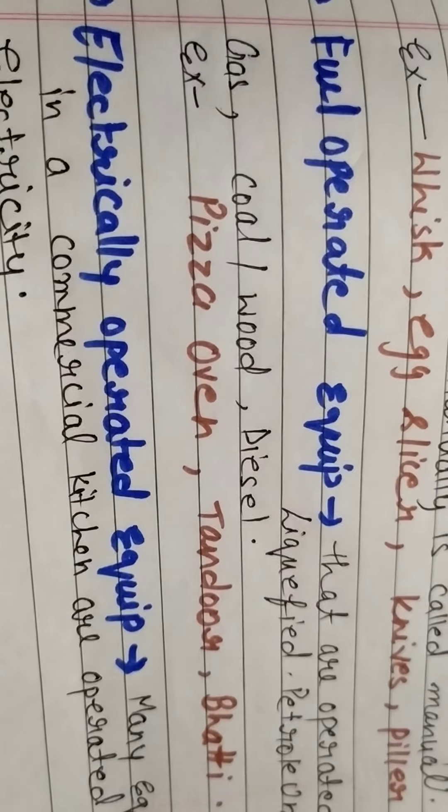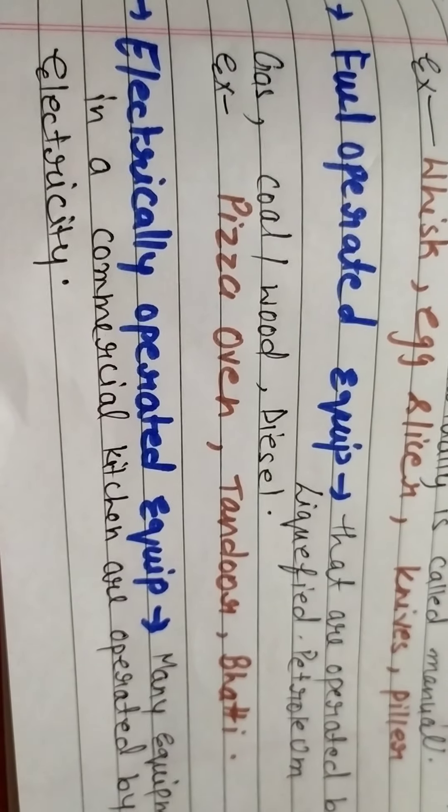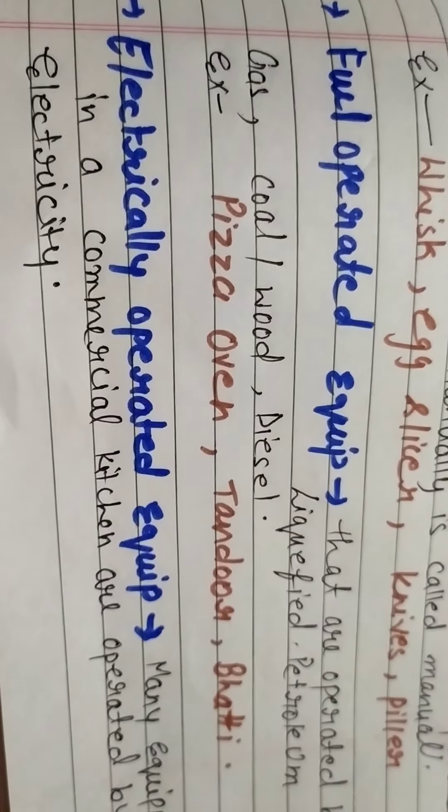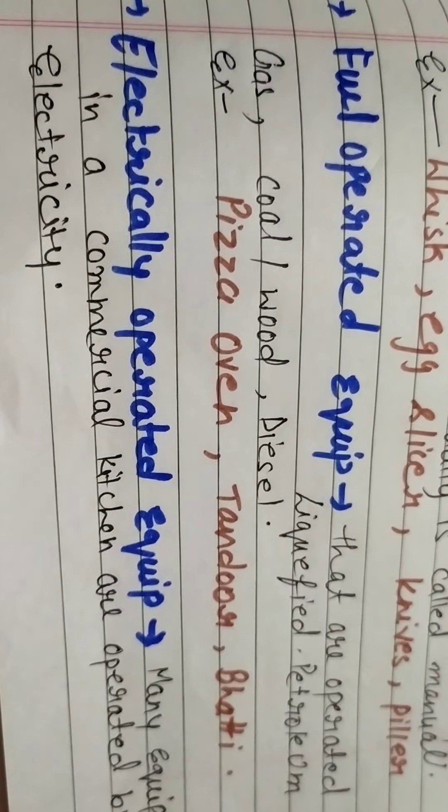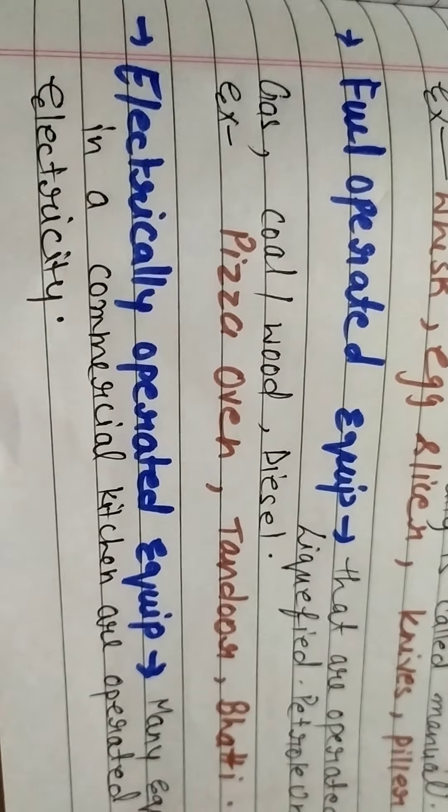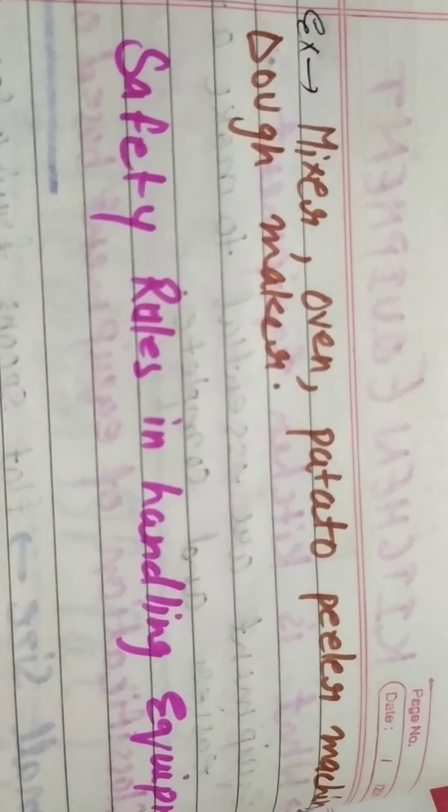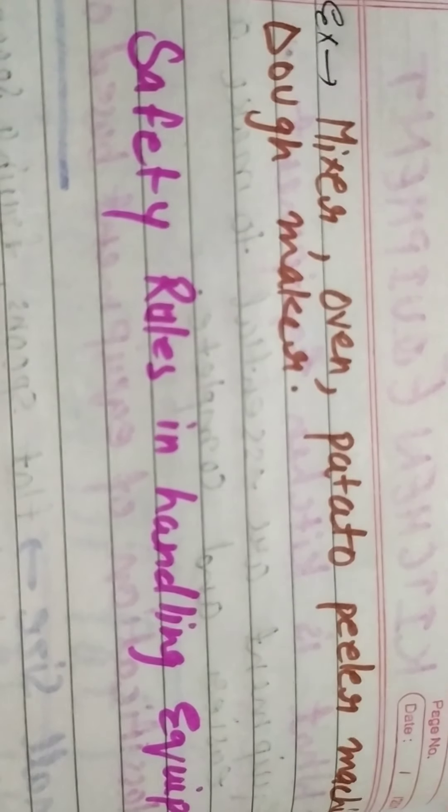Next, electricity operated equipments where we use electricity. Examples include mixer, oven, potato peeler machines, dough maker, etc.